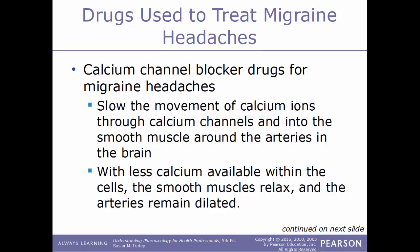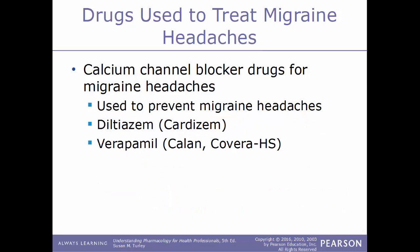Calcium channel blockers are also used to treat migraines. These act by slowing the movement of calcium ions through calcium channels and into the smooth muscle around the arteries in the brain. With less calcium available within the cells, the smooth muscles relax and the arteries remain dilated. These are used to prevent migraine headaches. Examples include diltiazem, also known as Cardizem, and verapamil, also known by the trade names Calan or Covera HS.